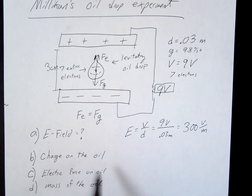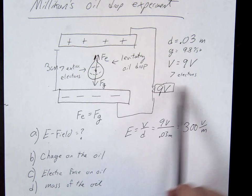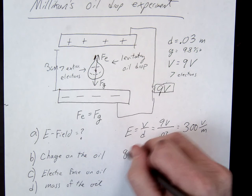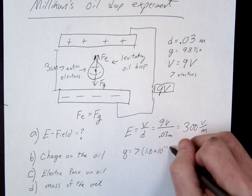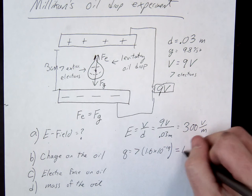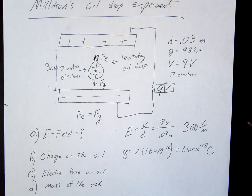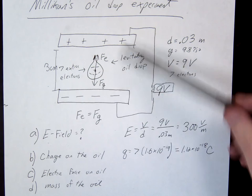Letter B: charge on the oil. The key idea is there are 7 extra electrons. So if we had one extra electron, the charge would be 1.6×10⁻¹⁹ coulombs. If we have 7, we multiply by 7. And if they were extra protons instead, the plates would have to be opposite in order for it to levitate.